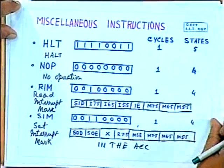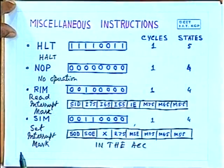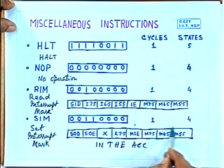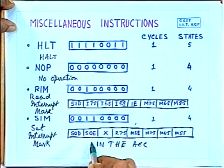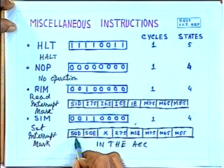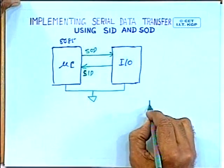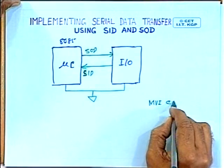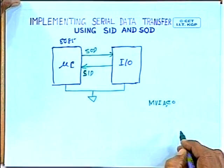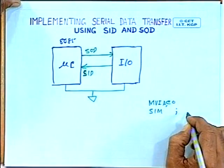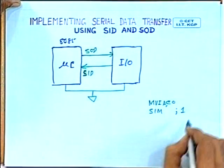You have to use the SIM and RIM instructions. SIM is a dual-purpose instruction — one part is used for interrupt masking; let us ignore that. Suppose you want to send a 1 on the SOD line: bit 7 (SOD enable) has to be 1 and bit 6 (SOD data) has to be 1. So if you write MVI A, C0H and then execute SIM, it will transfer 1 on the SOD line.